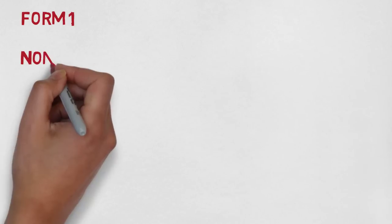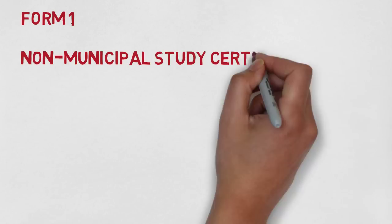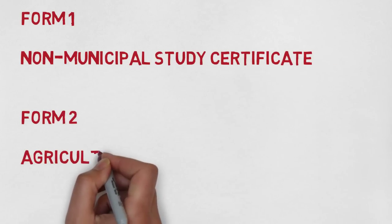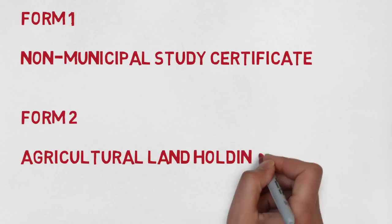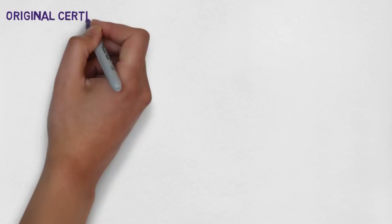Form 1 is the non-municipal study certificate, which is proof that you have studied for 4 years from these schools. Form 2 is the agriculture land holding certificate, which shows whether you are having land of your own or not.